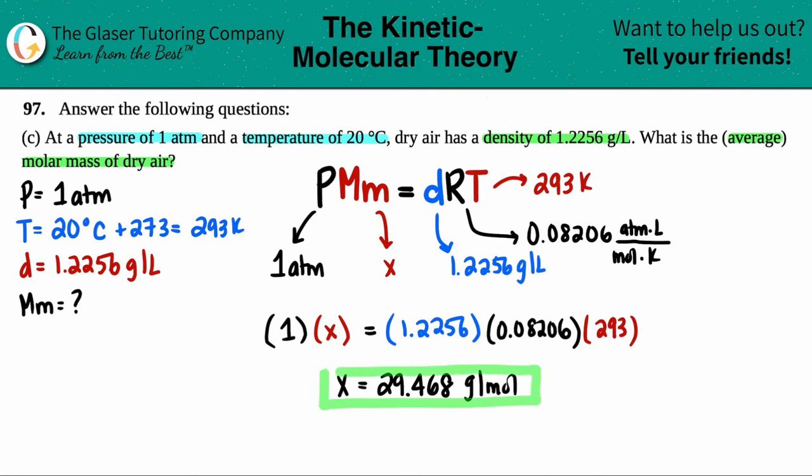And this is molar mass. Remember molar mass is always in grams per mole. Okie dokie, and that's it. That's the average molar mass of the dry air.